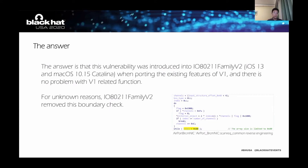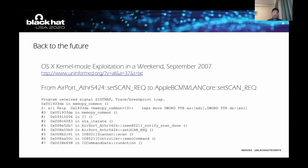I think you may have similar questions as I did a few months ago — why can such an obvious vulnerability survive to 2020? The answer is that this vulnerability was introduced into V2 when porting the existing feature of V1, and there is no problem with the V1 related function. There is a limit on the size of the array on macOS Mojave, but for unknown reasons, IO80211 Family version 2 removed the boundary check. So this is a brand new vulnerability introduced by developers. A more interesting fact is that this is not the first time the set scan request function is vulnerable — if you have read the article 'OSX Kernel Mode Exploitation in a Weekend,' you will find this function was attacked 13 years ago.